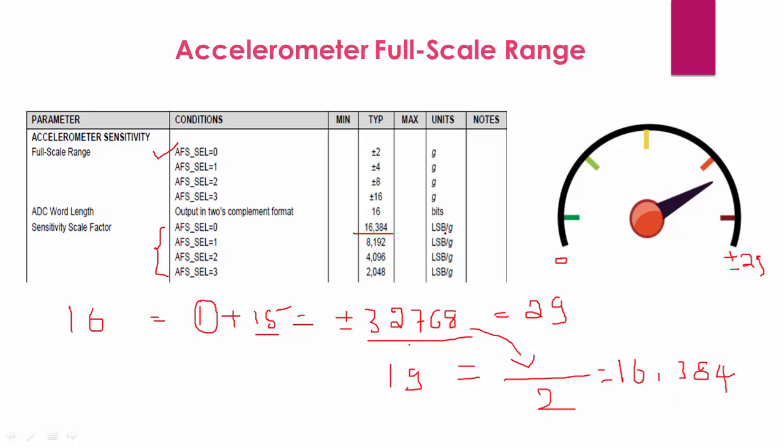So that gives us this value, 16,384. That makes sense, because for every g of acceleration the output produced is 16,384. So for 2g it produces this much.